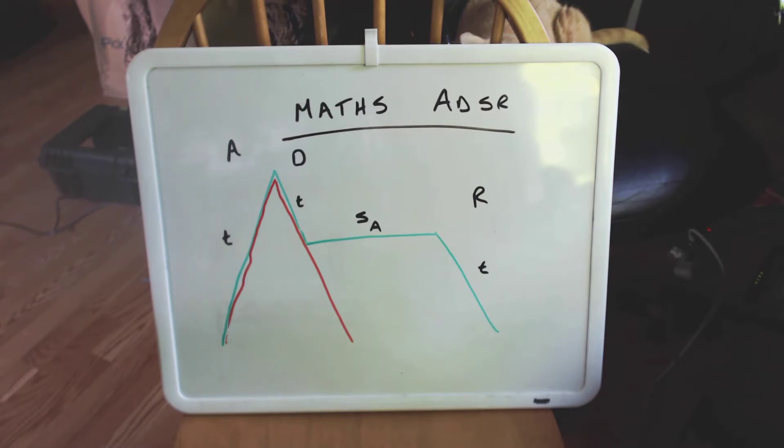So imagine that the gate signal comes in here. And we have channel 1 creating the envelope in red. Now, at the same time, we also have channel 4 triggered, but that's going to have different settings.